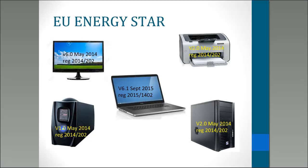The product groups covered under EU Energy Star are: displays, imaging equipment, enterprise servers, computers, and uninterruptible power supplies. For each, there's a different version number of the specification, the date it came into effect within the EU, and the EU regulation number. You can access the regulations with all the details from the EU Energy Star website; for the English version, you need to use the URLX site.